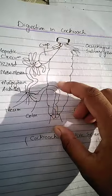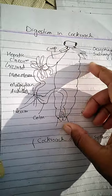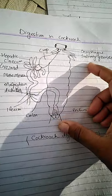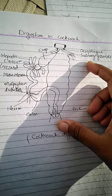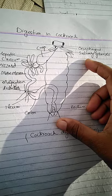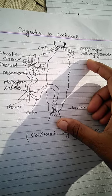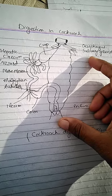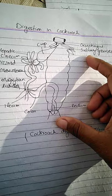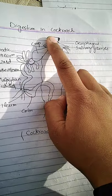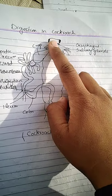This digestive system is divided into three divisions. The first one is the foregut, the second is the midgut, and the third is the hindgut. In the foregut, mouth cavity and pharynx are included.